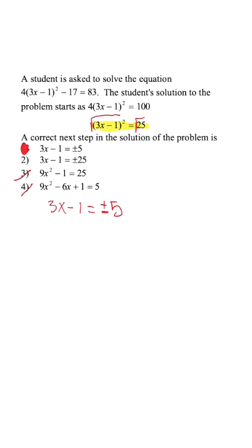But let's say they wanted you to actually solve this. So we'd have 3x is equal to 1, positive 1, plus or minus 5. Then to get x by itself, we'd divide by 3.